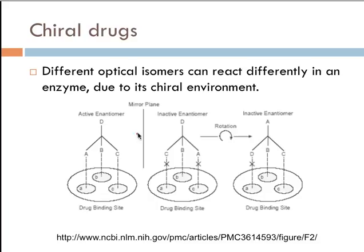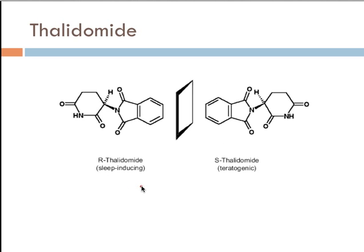This explains why chiral drugs are so important — either they line up with the drug binding site or they don't. One chiral drug that the IB uses as an example is thalidomide. There is the R-thalidomide — remember, R and S relates to how it rotates the plane of polarized light. The R enantiomer is sleep-inducing and was originally used for morning sickness.